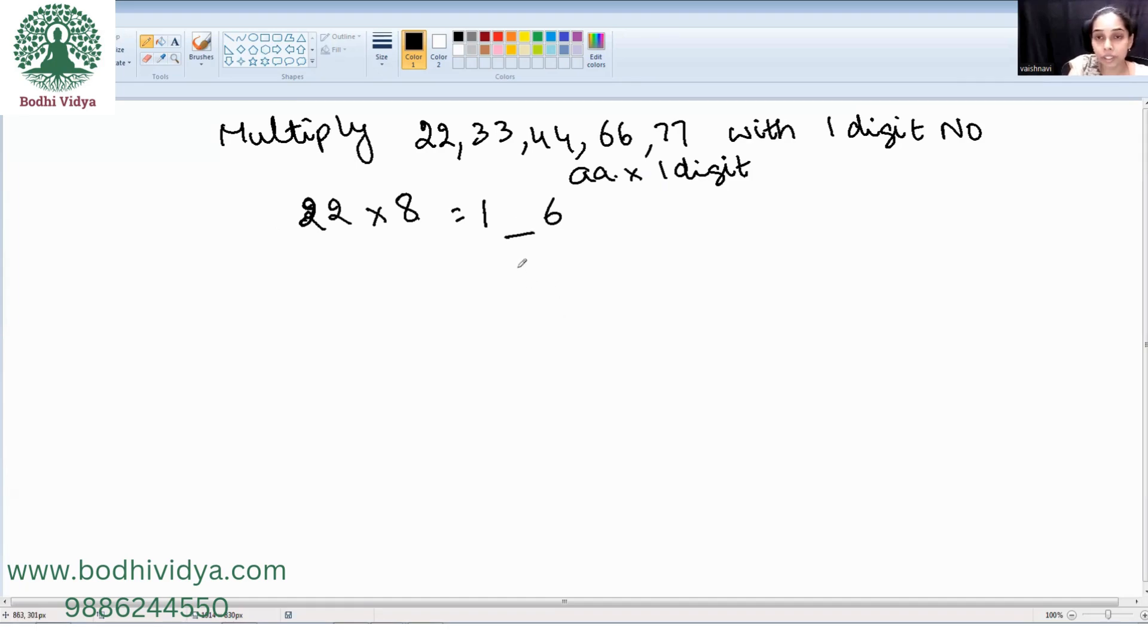Now the middle term. To get the middle term, we just add these two digits and we get the answer as 176. 1 plus 6 is what? 7.